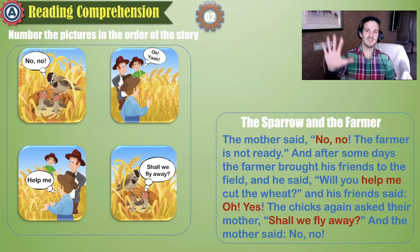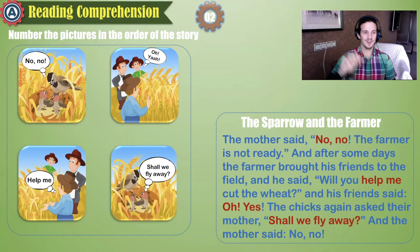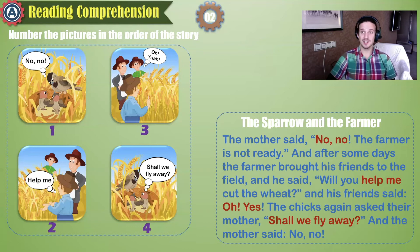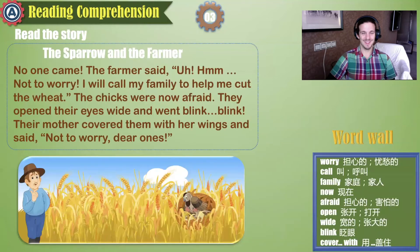Number the pictures in the order or sequence that they appeared in the story. Picture one: no, no. Picture two: oh yes. Picture three: help me. Picture four: shall we fly away? Here is the order: no, no — help me — oh yes — shall we fly away.